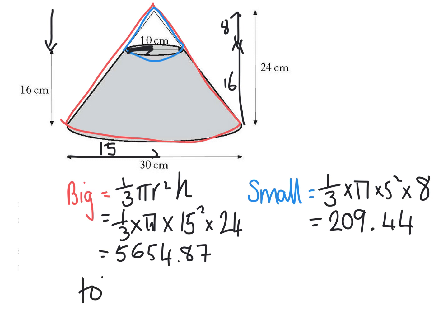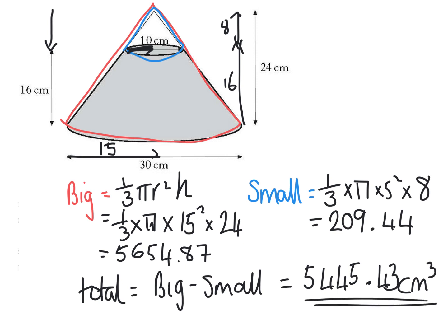So my total volume this time, I'm going to cheat and I'm just going to write big take away small to save me writing those numbers. So I'm doing the 5,000 number take away the 200 number, and that gives me 5,445.43 centimetres cubed. Now I didn't mention sig fig in this one, so we're no sig fig. I mentioned I always do two decimal places. So that is me showing you a couple of composite volume questions.